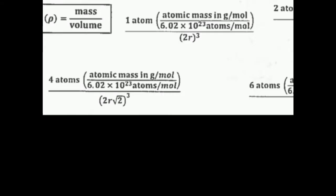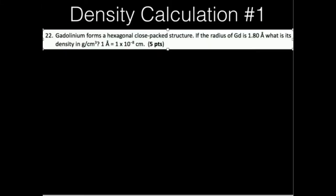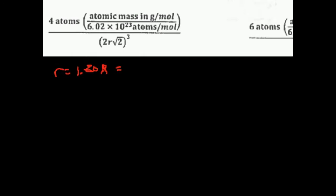Let's write down what we know. The atomic radius is 1.80 angstroms. They give us a conversion factor: 1 angstrom equals 10 to the minus 8 centimeters. So this equals 1.8 times 10 to the minus 8 centimeters.